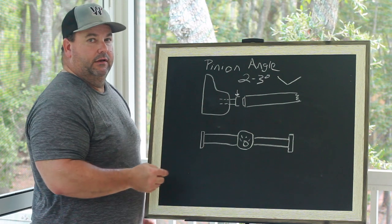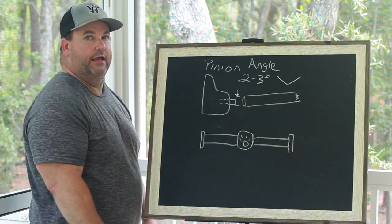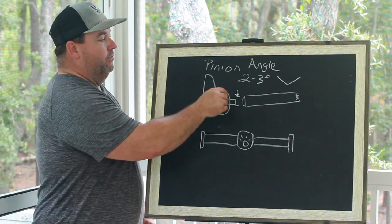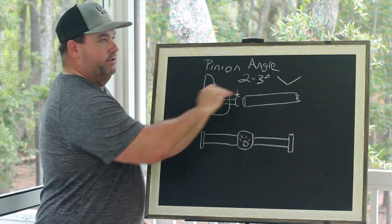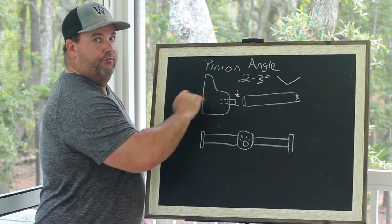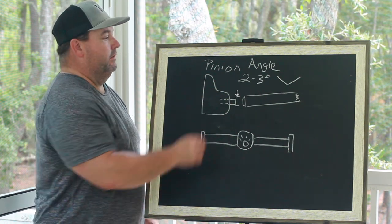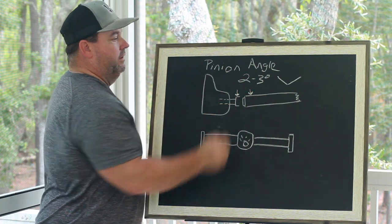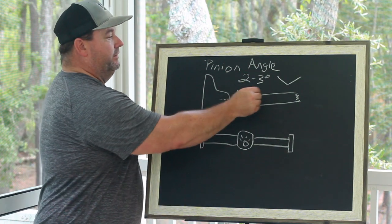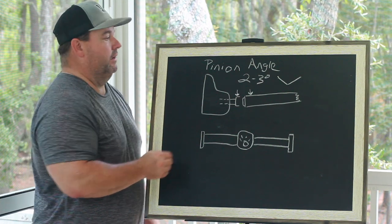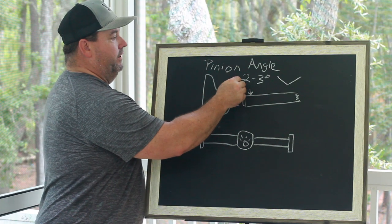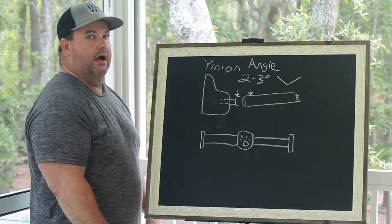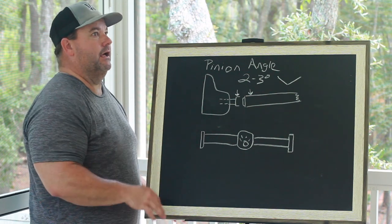Whatever that angle is, I will zero out my gauge or write that number down. Once I know the angle of the yoke, the flat side of the yoke that's machined, I know the reference point for my pinion. Then with that in mind, I will place the gauge on the surface of the drive shaft and I will look at the difference in these two angles. And the difference in these two angles I'm shooting for is two to three degrees.